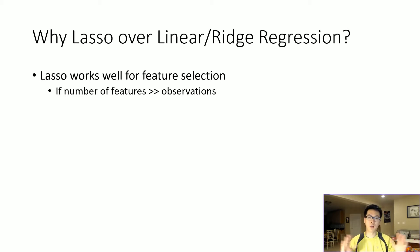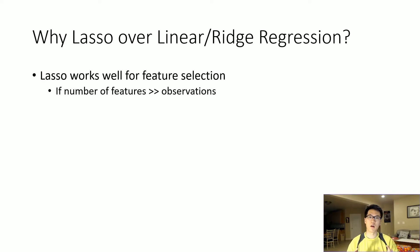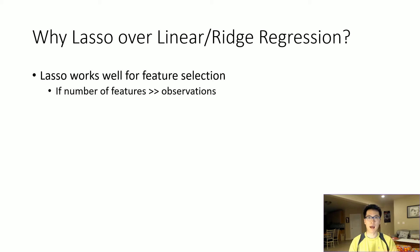...lasso is another way of modeling the complexity and works really well for feature selection if your features outweigh the number of observations. That's one of the reasons why you would use lasso over linear.